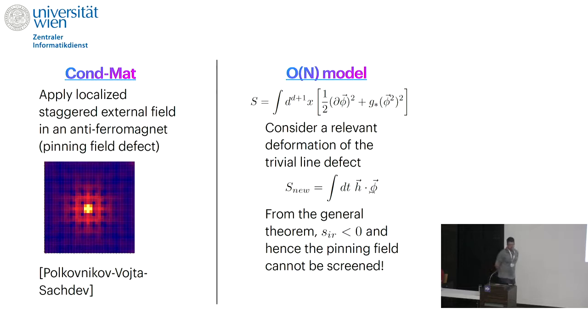Let me show you the first example. This will be a line defect in the O(N) model, so it's not a Wilson line—it's simply in a scalar field theory. On the condensed matter side, there is a nice paper by Polkovnikov, Vojta, and Sachdev, and many recent follow-ups. What they do to define a line defect is they take some anti-ferromagnet and they apply magnetic field, but only on a few sites—a staggered magnetic field on a few lattice sites. Because it's only applied on a few lattice sites, it's a local perturbation, and it leads to some impurity that they would like to study at long distances.